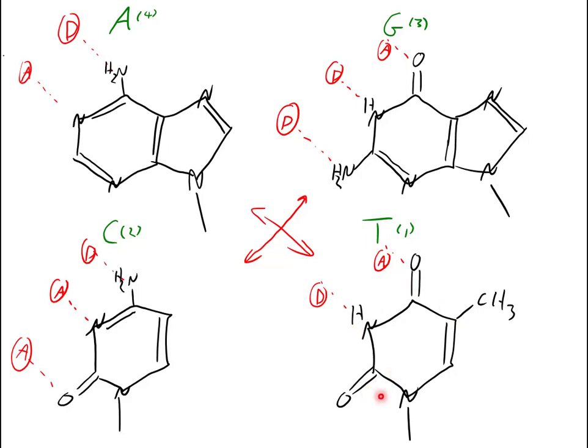So if you pull thymine from your card, try to draw adenine by first drawing a purine skeleton, fill in the complementary hydrogen bonding pattern, and then fill in the double bonds based on the 4-3-2-1 rule.